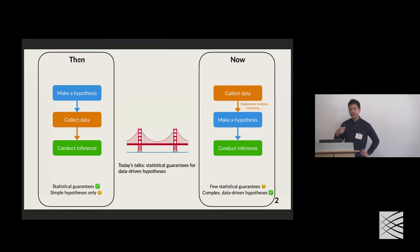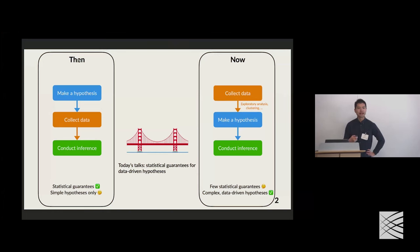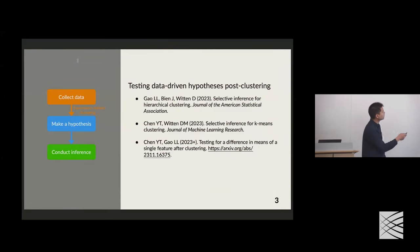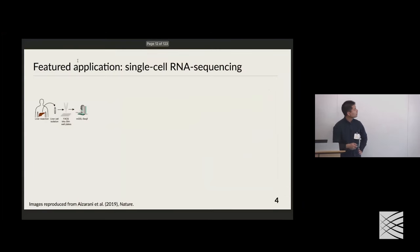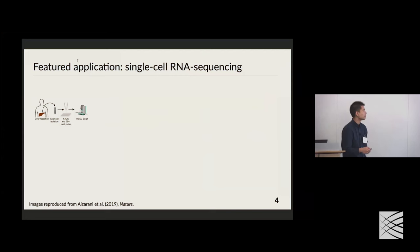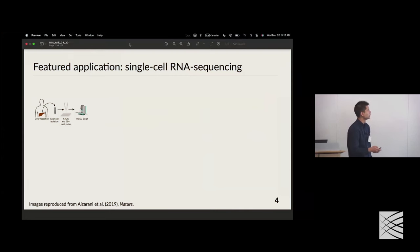Today's talk centers on how we can bring in a little more statistical guarantee from the classical left paradigm into the modern paradigm we practice on the right. To open with this, I want to motivate with three papers we'll be talking about today, looking at a technique called selective inference applied to different clustering algorithms. Before I dive into the detailed math, I want to walk through a concrete application of this pipeline for single-cell RNA sequencing analysis.